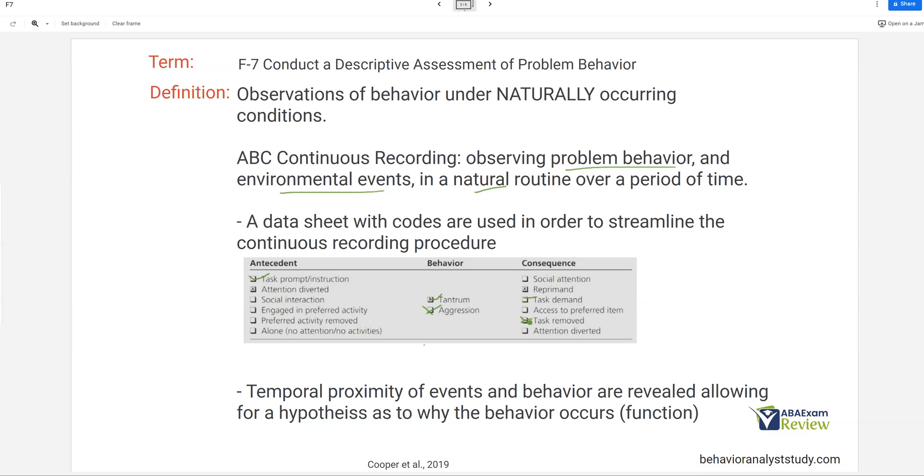Now, temporal proximity of events and behavior are revealed, so that means when we talk about temporal, we mean places and time, right? And so, the proximity of the antecedents and consequences allow us to hypothesize why the behavior occurs. And it's important to remember that with descriptive assessments, you're not necessarily identifying the function. You're just starting to hypothesize functions. So, think about description, prediction, and control. This is more along the lines of prediction. We're predicting what we believe is the function based on the antecedents and consequences that we start to record over time.